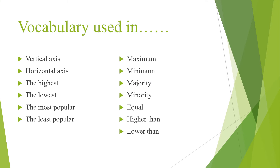First, we'll see the vocabulary used in bar graphs: vertical axis, horizontal axis, the highest, the lowest, the most popular, the least popular, maximum, minimum, majority, minority, equal, higher than, and lower than.